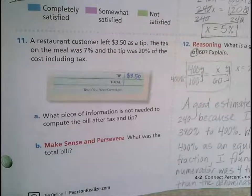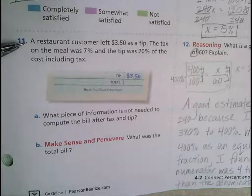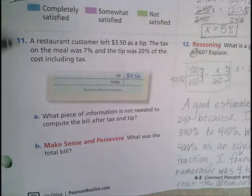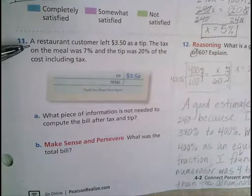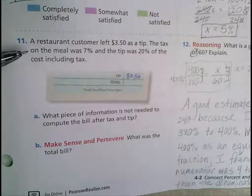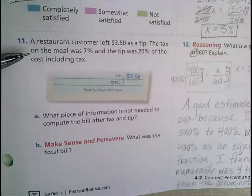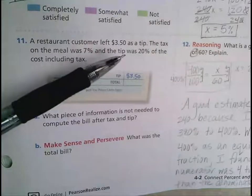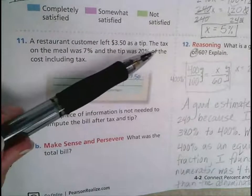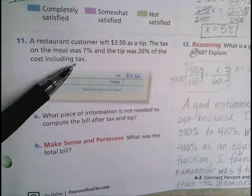Number 11: A restaurant customer left $3.50 as a tip. The tax on the meal was 7% and the tip was 20% of the cost including tax.